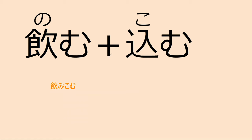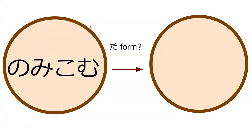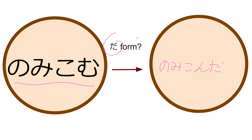Nomi-komu basically means to swallow — rather than like drinking something, more like swallowing down. And tsuba means spit. Do you know the past tense form of nomi-komu? That would be nomi-kon-da — right, kon-da. Yep, nomi-kon-da, perfect.